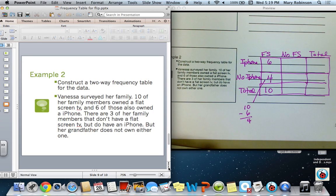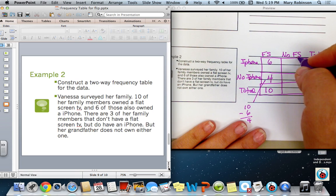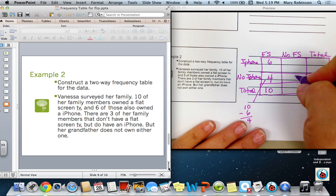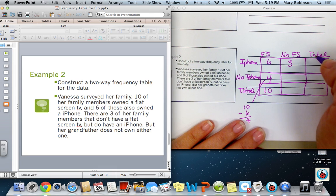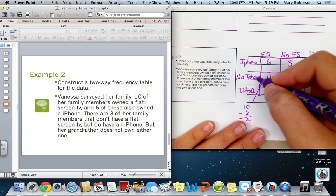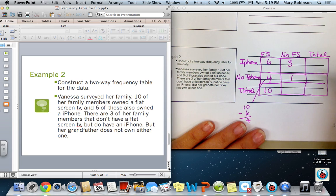Next, it says, there are three of her family members that don't have a flat-screen, but they do have an iPhone. So, no flat-screen, and they do have an iPhone. So, our number three will go here in this box. It also says that her grandfather does not have either one. So, he has no flat-screen and no iPhone. So, that's one. So, I'm going to circle this one here because we had to do some computation to find that. It's kind of like solving a one-step equation, right?